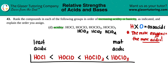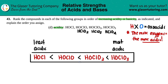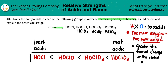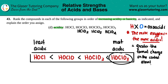Now we just have to figure out the explanation. More oxygens equals more acidic. This is because of the greater formal charge — remember that's the oxidation state — on the central atom. The central atom is always the one that is not the hydrogen or the oxygen; in this case, it's chlorine. If you solve for the formal charges on chlorine, the Cl in HOClO3 will have the highest formal charge and HOCl will have the lowest. The higher the positive formal charge, the more acidic.